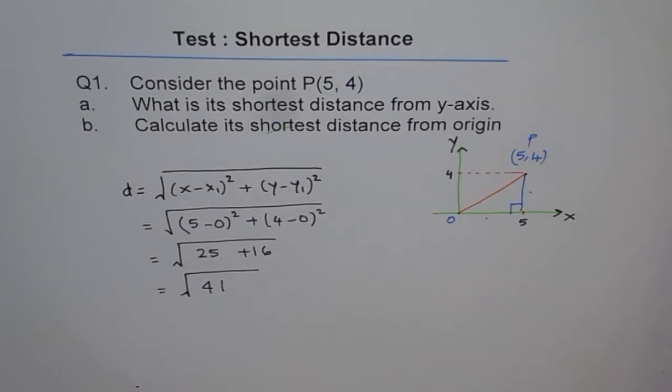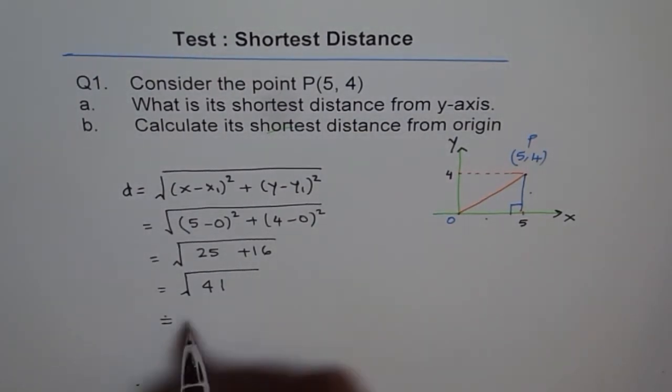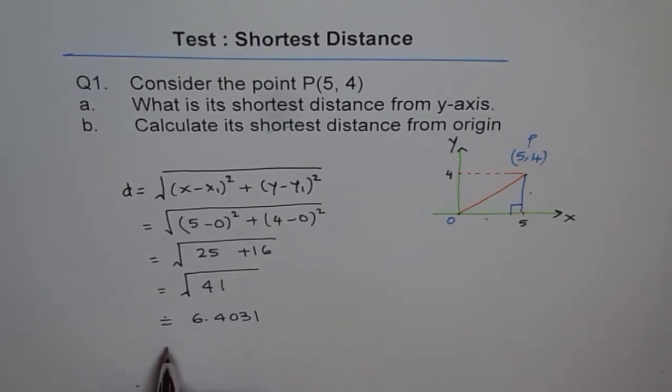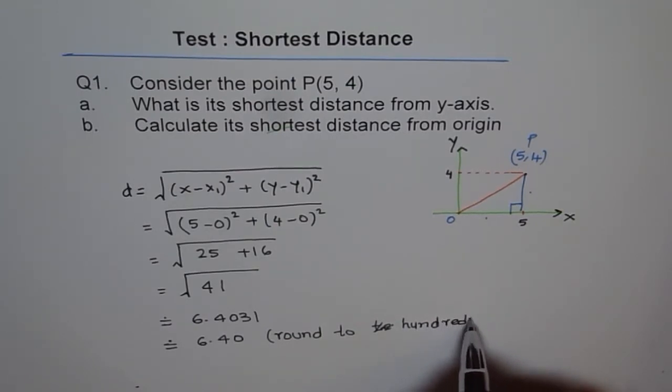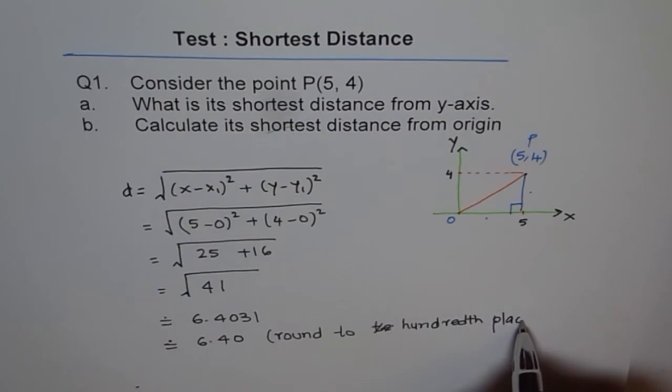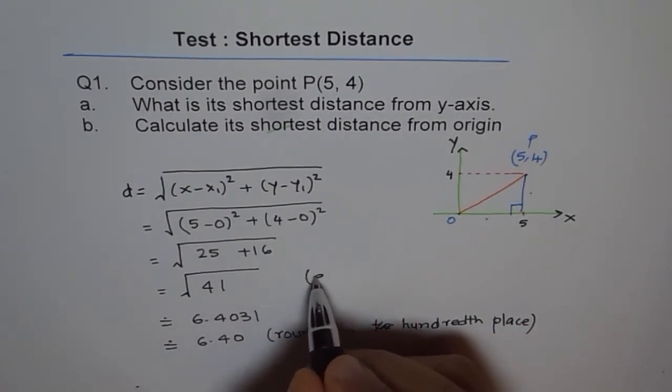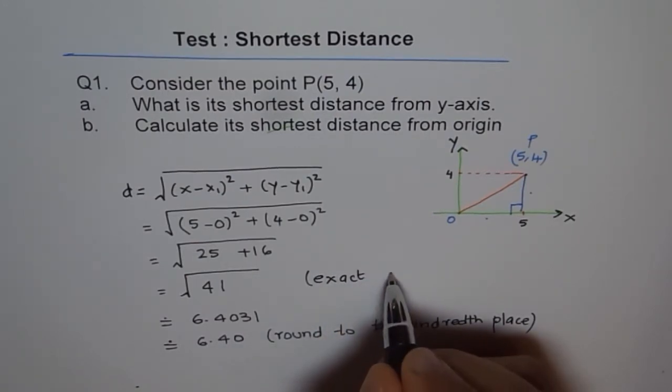So this is only if they say round to two decimal places. Then it means this dot here means approximate to, right? Two decimal places means you will have to write 6.40. Two decimal places, this is round to hundredth place, which means two decimal places. And this answer you will give if it says exact answer.